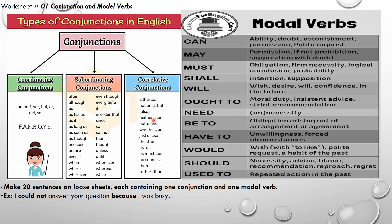For worksheet number 1, learn it carefully and understand the rules. After comprehending the rules, you will make 20 sentences on loose sheets, each containing one conjunction and one modal verb. For example: 'I could not answer your question because I was busy.' Here the modal verb is 'could not' and the conjunction is 'because', so in one sentence I have combined two elements: a conjunction and a modal verb.